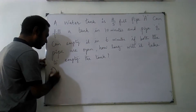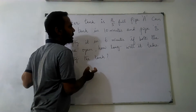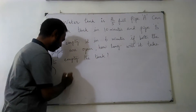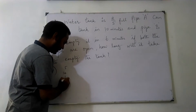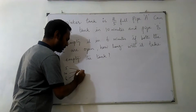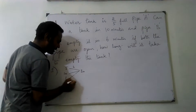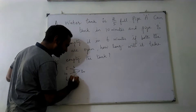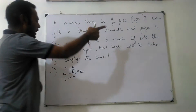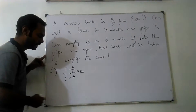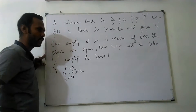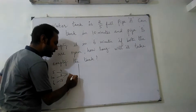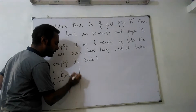Method 1: Find the LCM of 5, 6, and 10. The LCM is 30. How many 5s are in 30? Six 5s. How many 10s are in 30? Three 10s. How many 6s are in 30? Five 6s. Pipe B empties the tank in 6 minutes, so empty means a negative sign. The tank capacity is 30 liters.